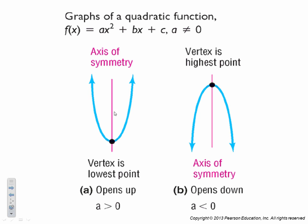The axis of symmetry is located at the vertex. If we're a happy face, the vertex is the minimum. If we're a frowny face, the vertex is the maximum.